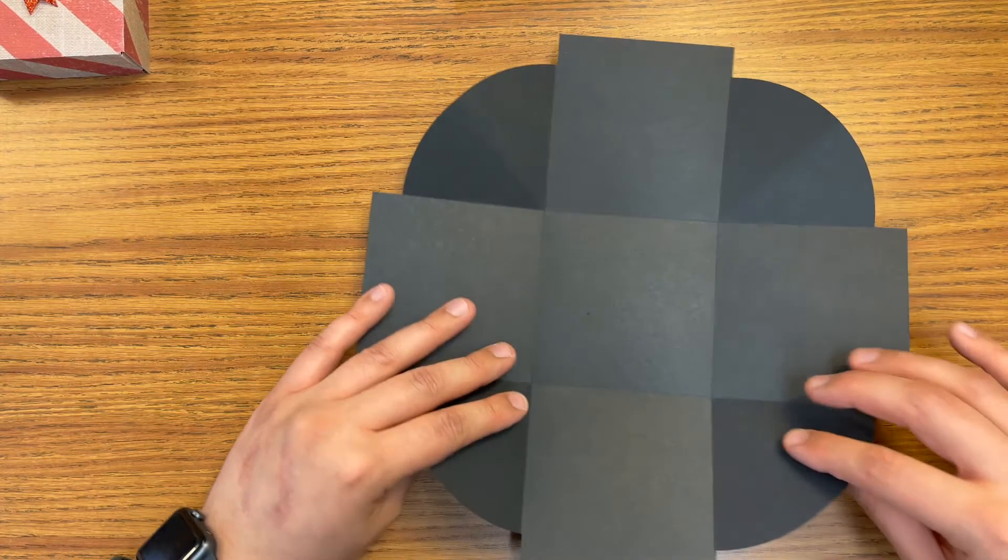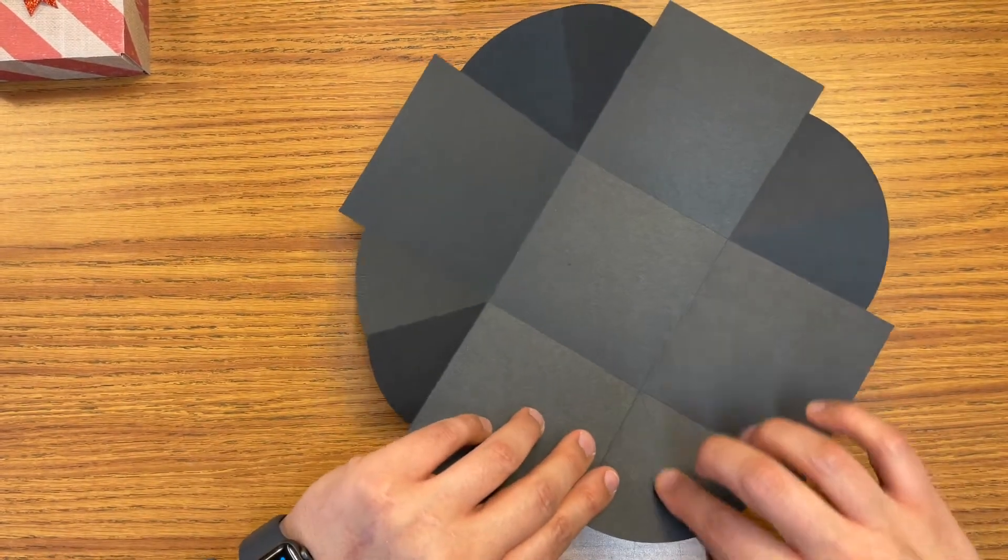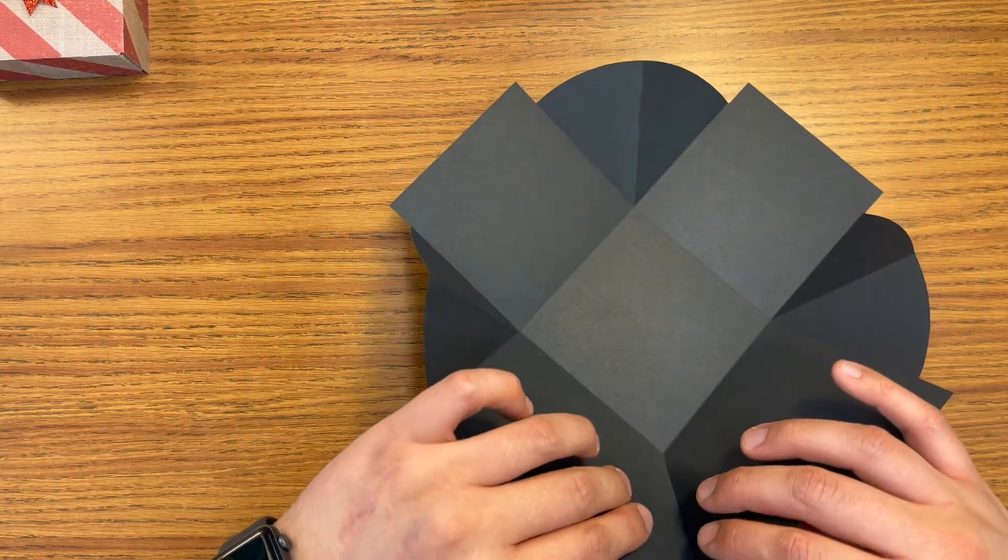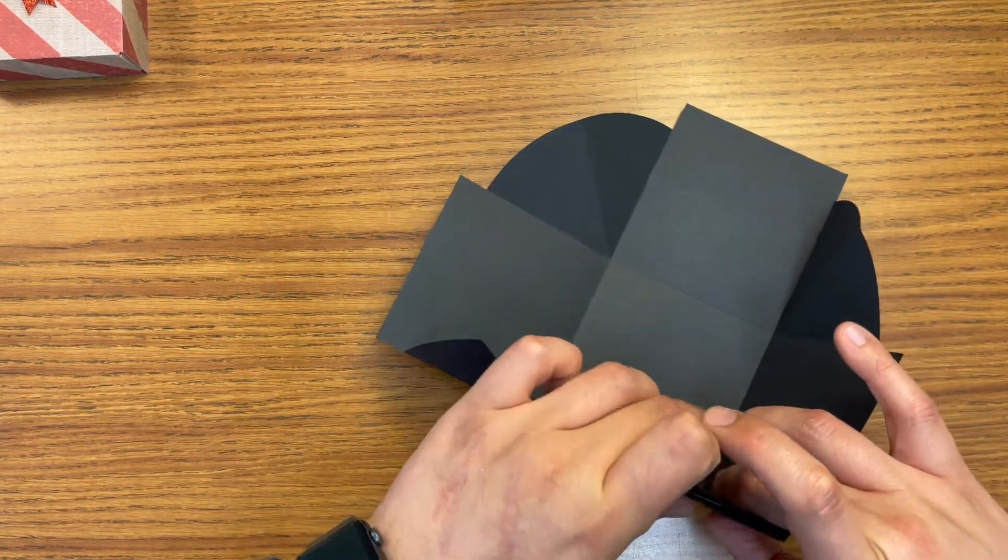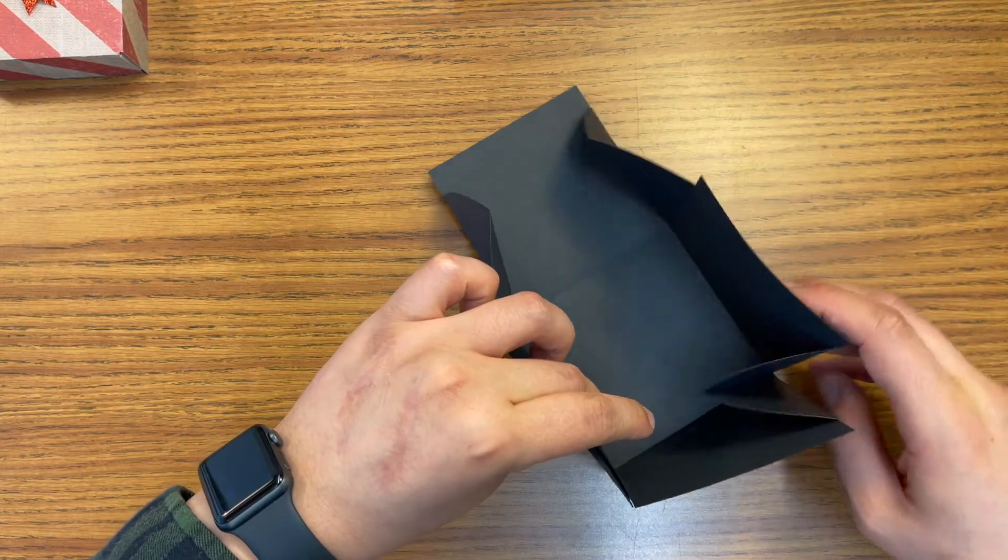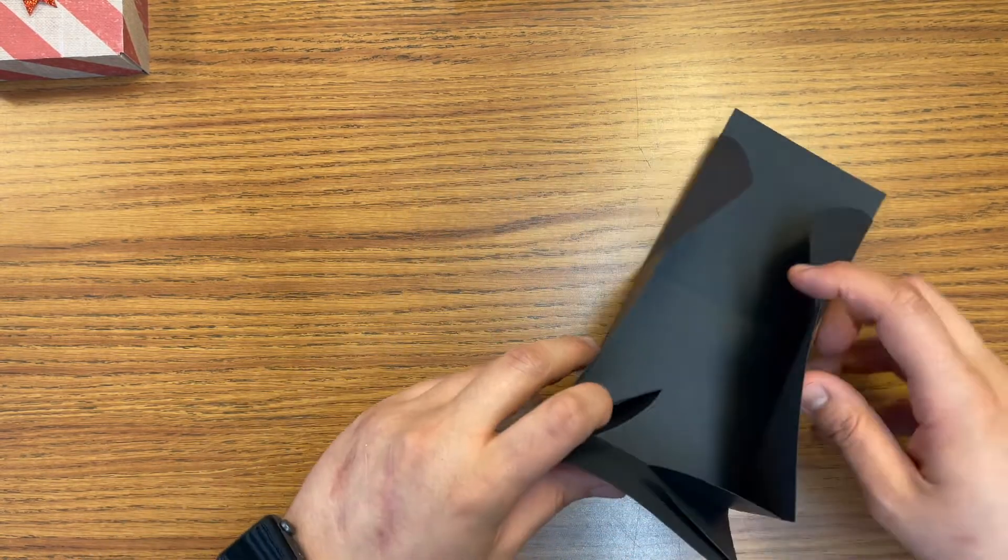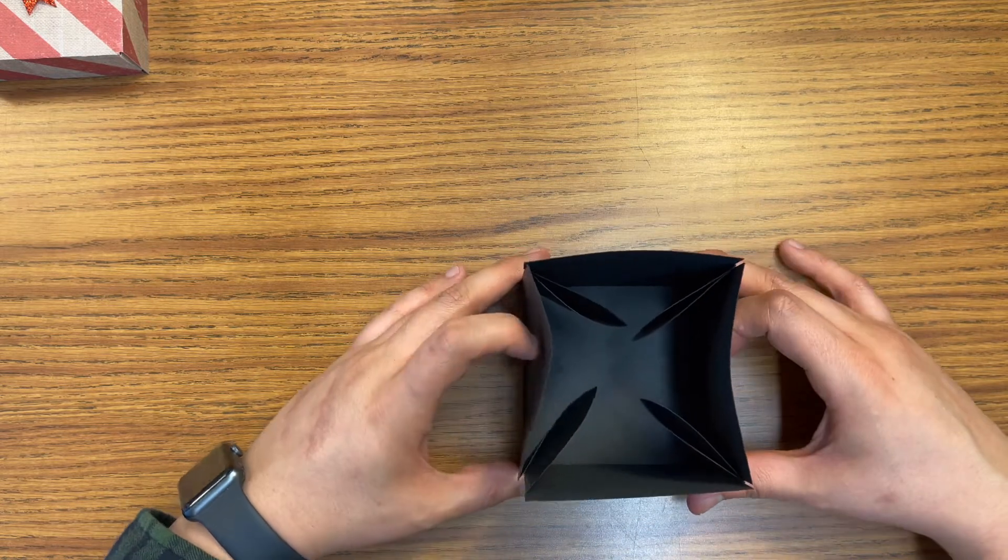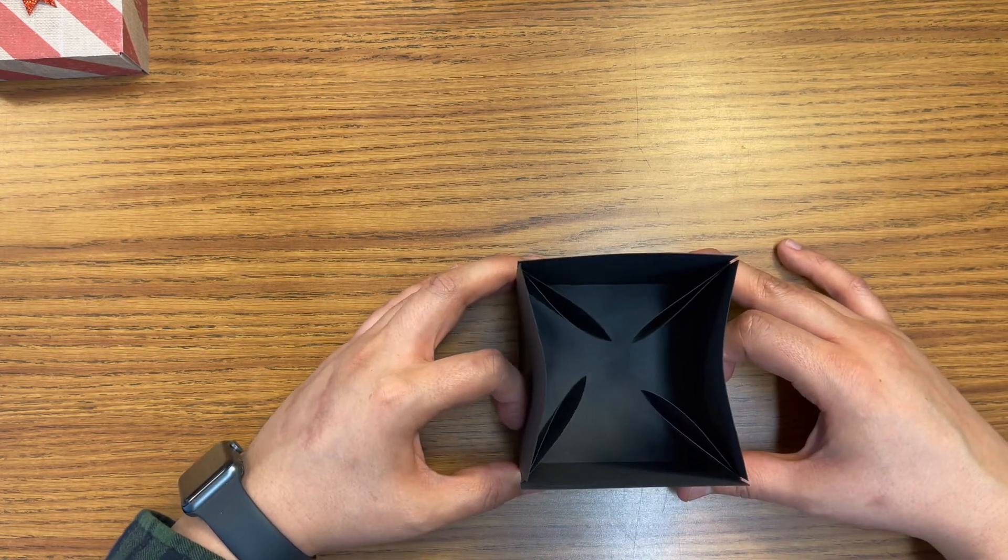And then to get these side pieces here, it helps if you fold away from the crease first and then fold it inwards the way you need it. So that way, once everything's nice and creased and folded, it will come together as a nice little square box. Put that aside.